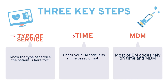There are three key steps for successful E&M coding. First is the type of service — you need to know what type of service the patient is there for. Next is time, which depends on how much time the doctor spent with the patient, including non-face-to-face visits. Then there's your MDM. Most E&M codes rely on time and MDM.